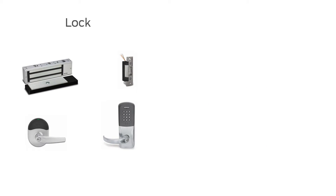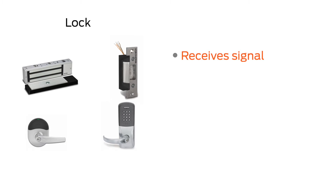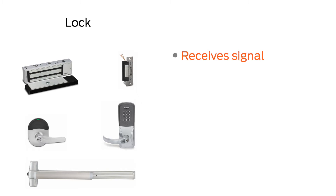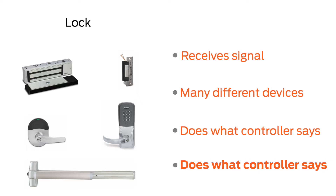If all of the checks the controller has been programmed to do pass, then the controller will send a signal to unlock the door. The lock is the part that receives the signal from the controller and unlocks. It might be a lock you're familiar with — with levers and a latch — or it might be an electric strike, a magnetic lock, or an exit device. Good access control systems can support sending unlock signals to a variety of them. The locking device's job is pretty simple: do what the controller says — unlock, lock, beep, flash a red or green light. The locking device doesn't perform any electronic function unless explicitly told to by the controller, and it doesn't know anything about the reader, the person getting in, or even what time it is. It just follows commands from the controller.